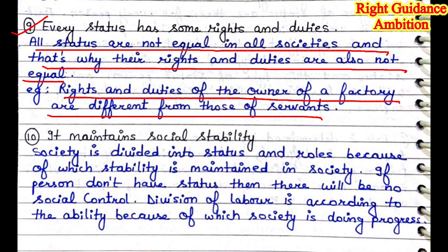Ninth point: every status has some rights and duties. All statuses are not equal in all societies, and that is why their rights and duties are also not equal. All statuses are different in their rights and duties. For example, the rights and duties of the owner of a factory are different from those of a servant. In a factory, the owner and the servants working for him have different rights and duties. That is why every status has some rights and duties.